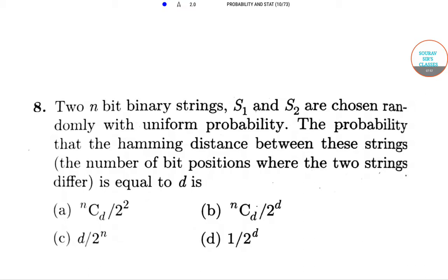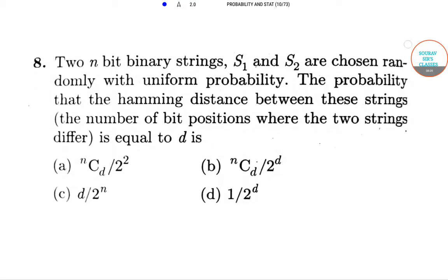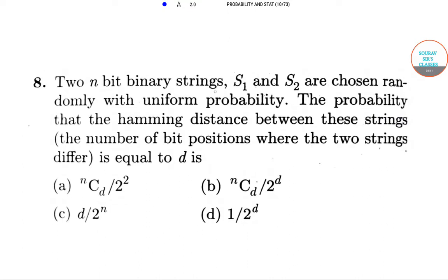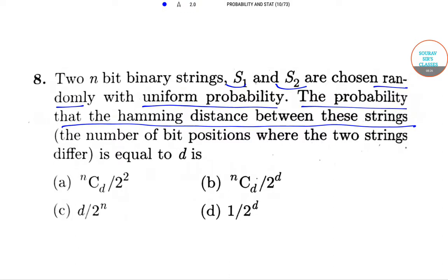Two n-bit binary strings S1 and S2 are chosen randomly with uniform probability. The probability that the total number of bit positions where the two strings differ is equal to d — that is, the hamming distance between the two strings equals d — is what?